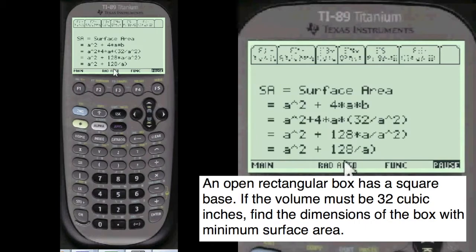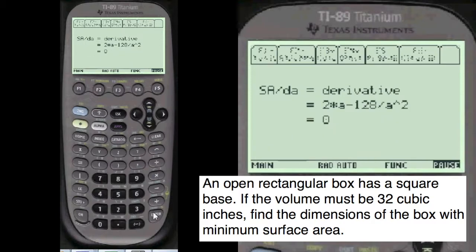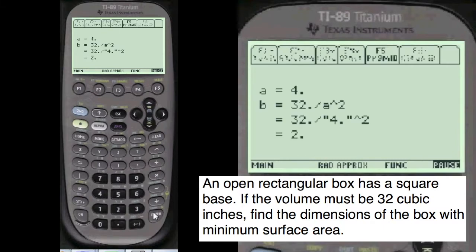Write down everything you see here. The idea is you take the derivative and find the minimum surface area and you set the derivative equal to zero.